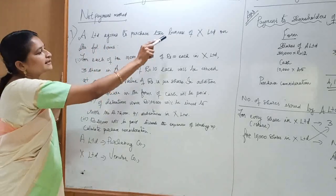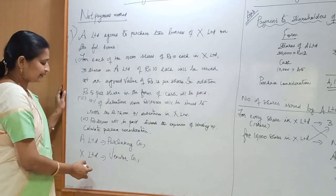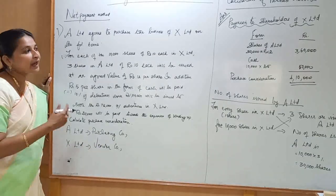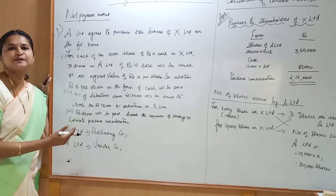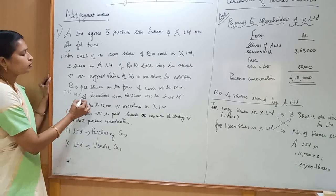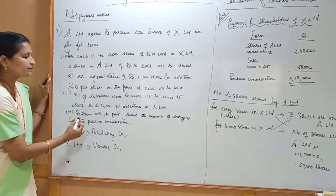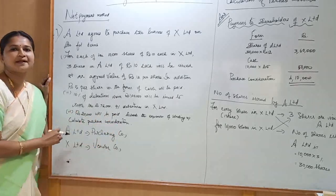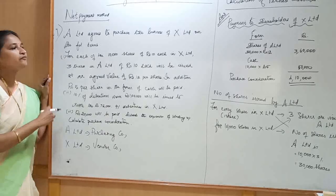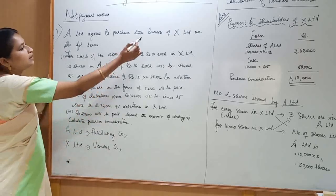A Limited agrees to purchase the business of X Limited. So A Limited is the purchasing company and X Limited is the vendor company. Payment made to shareholders of the vendor company must be considered for calculating purchase consideration. Payment made to debenture holders should not be considered, and payment of winding-up expenses also should not be considered for calculating purchase consideration.